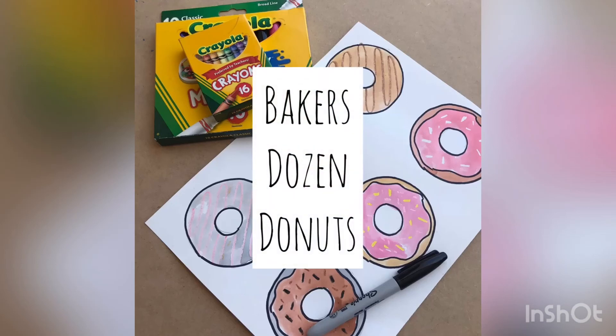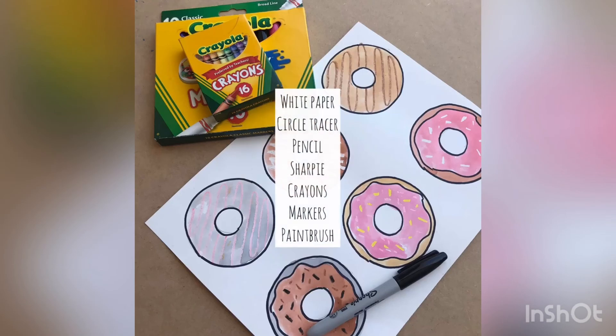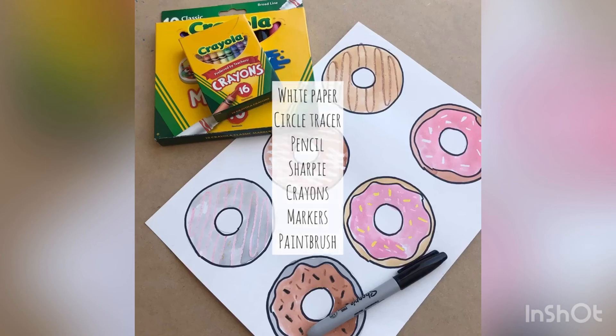Today's art lesson is a baker's dozen doughnuts. The materials you will need for this are white paper, a circle tracer, a pencil, a sharpie, crayons, markers, and a paintbrush.